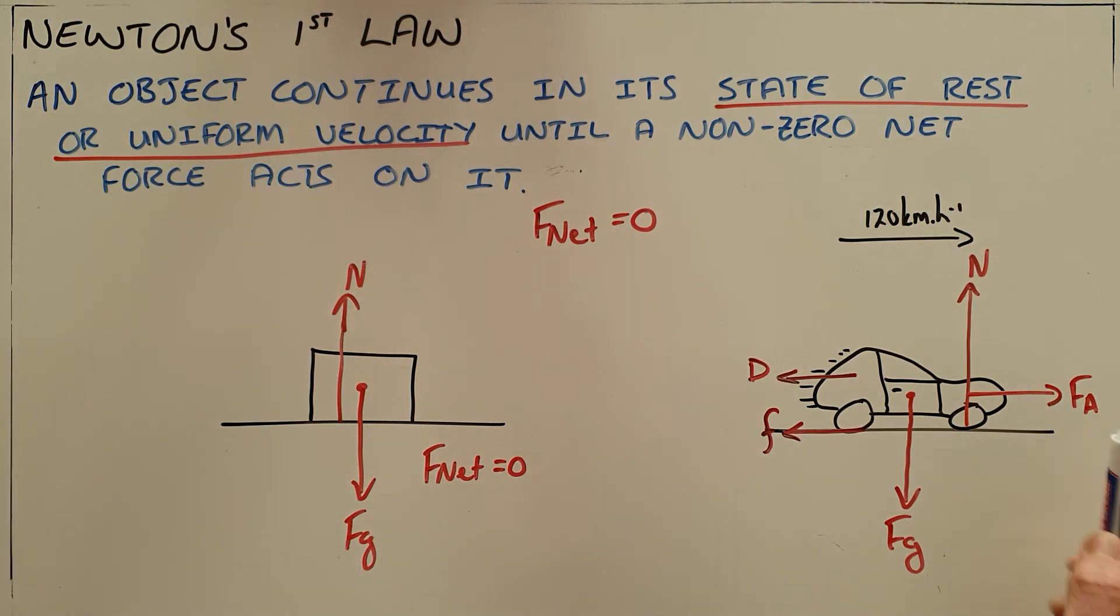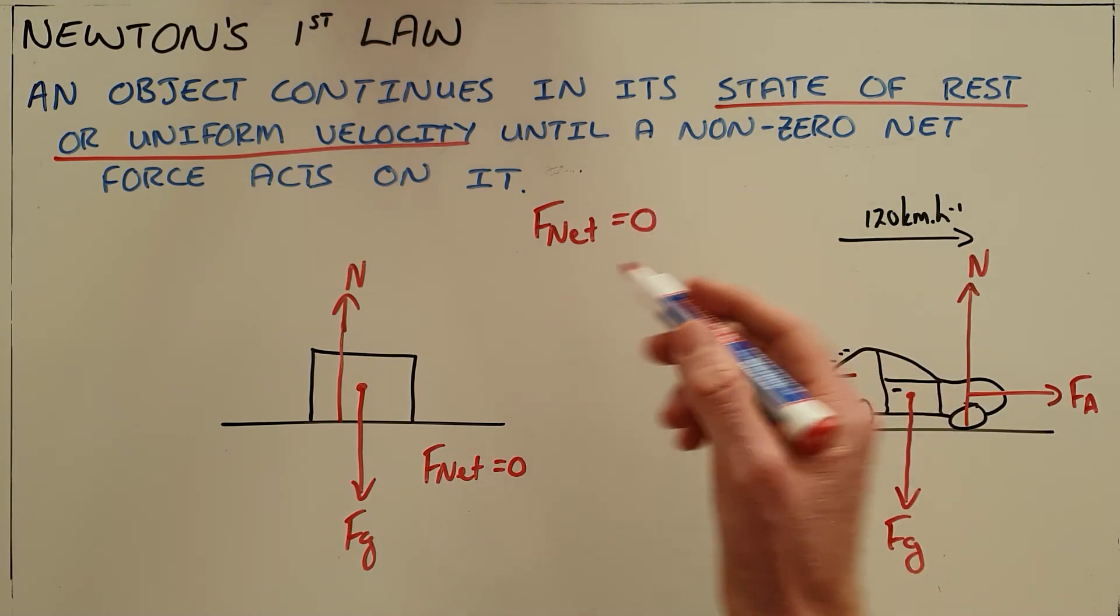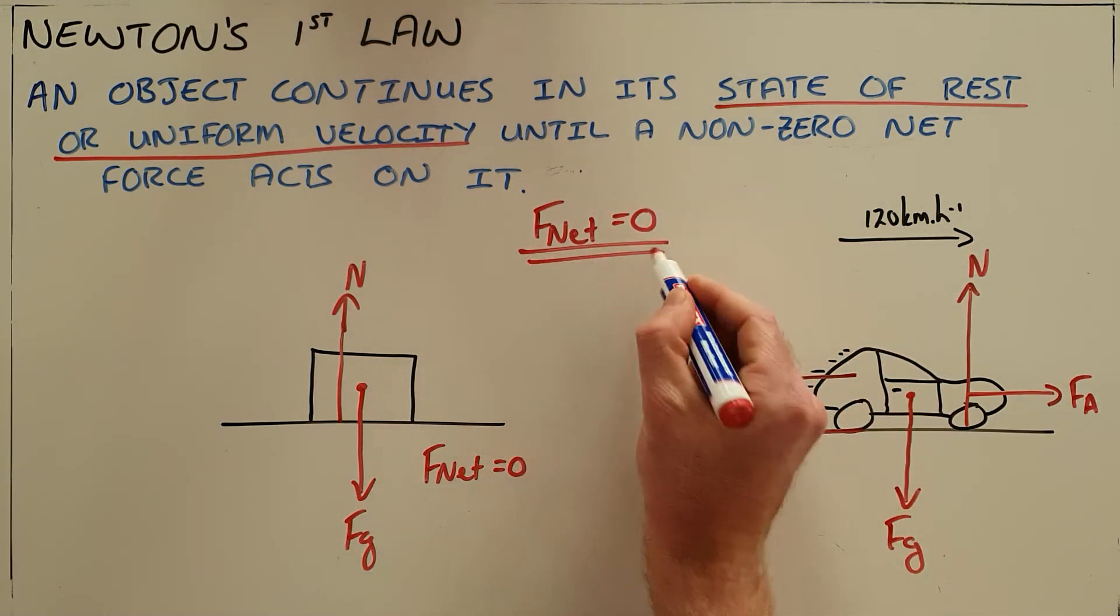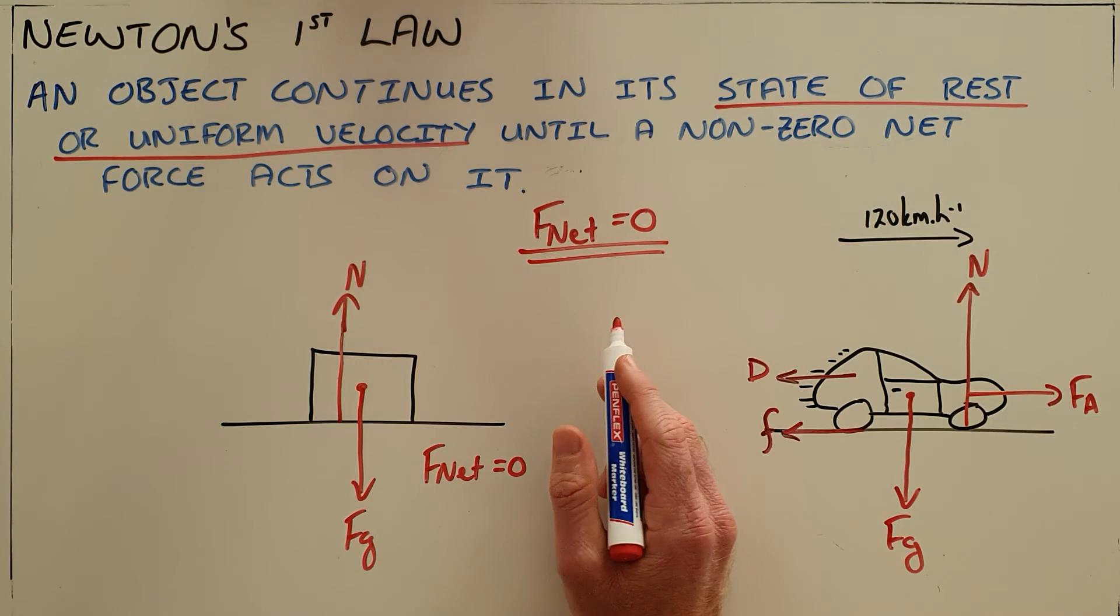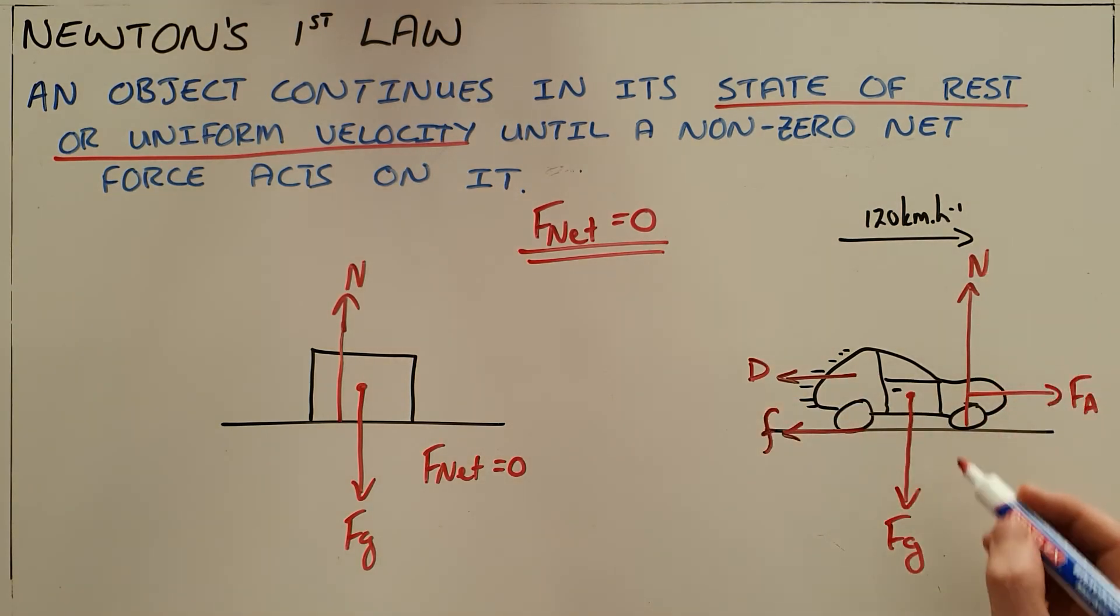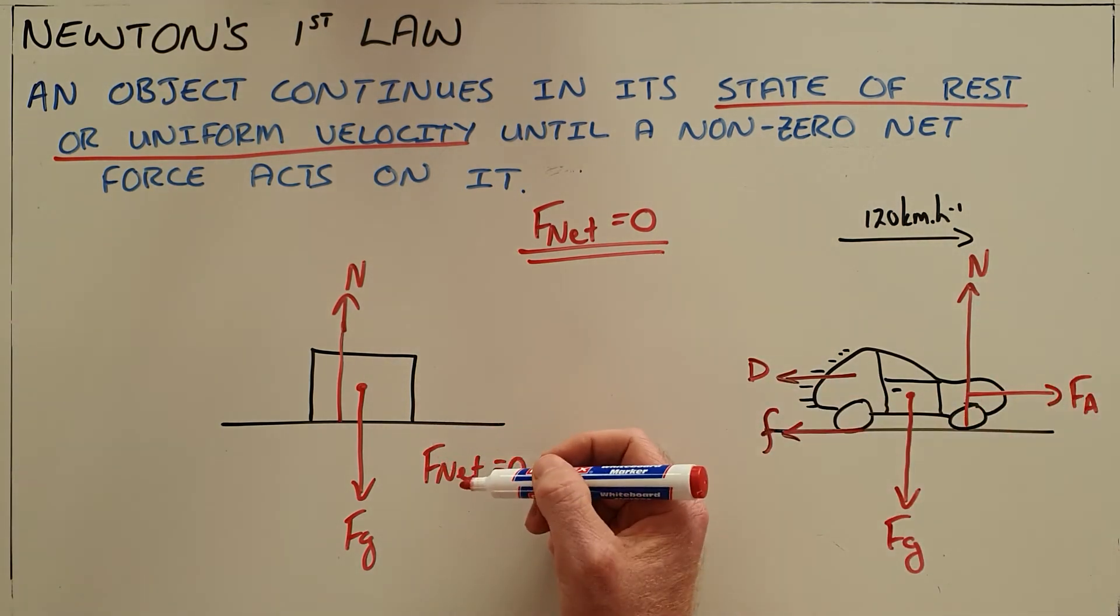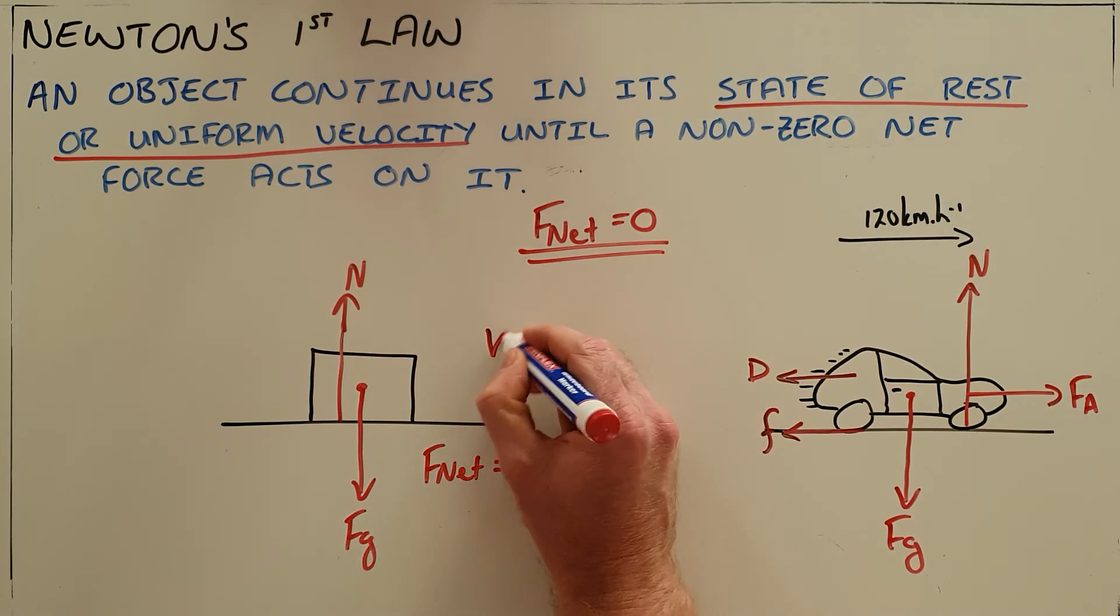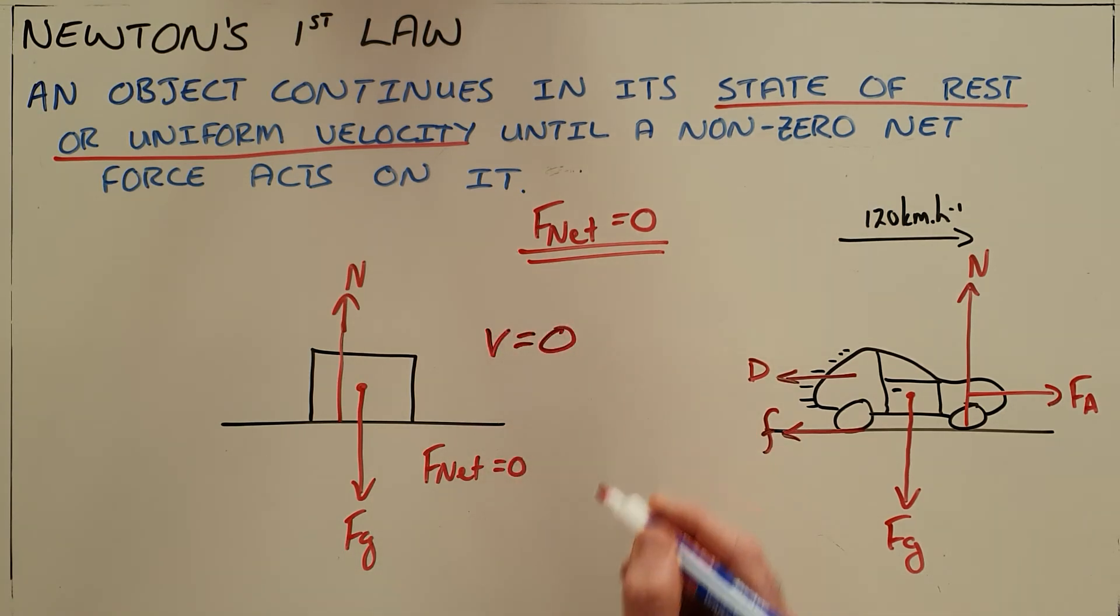So all that Newton's first law tells us is it just says that for as long as the net force acting on an object is zero, it will either travel at a constant velocity or it will remain at rest, which we can also simplify to just say the velocity of an object at rest is zero.